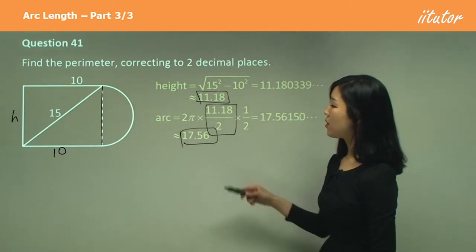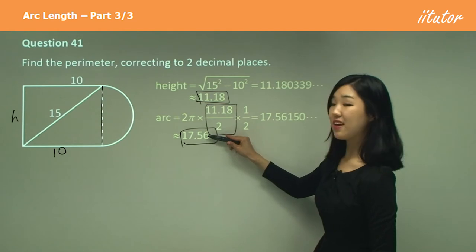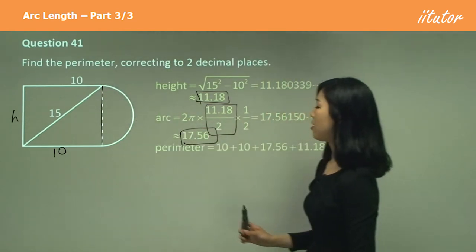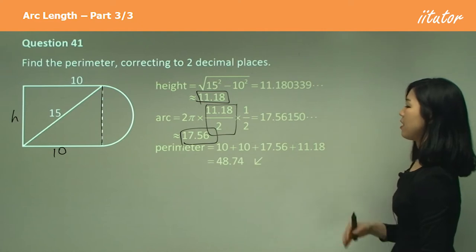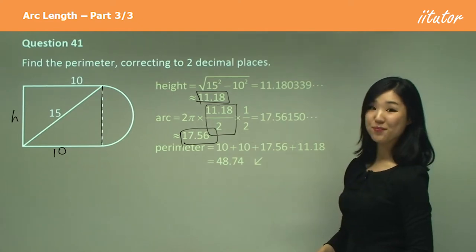So to find the perimeter we need to add the height, we need to add the arc, and we have to add two of the tens. So add them all up and you should get 48.74.